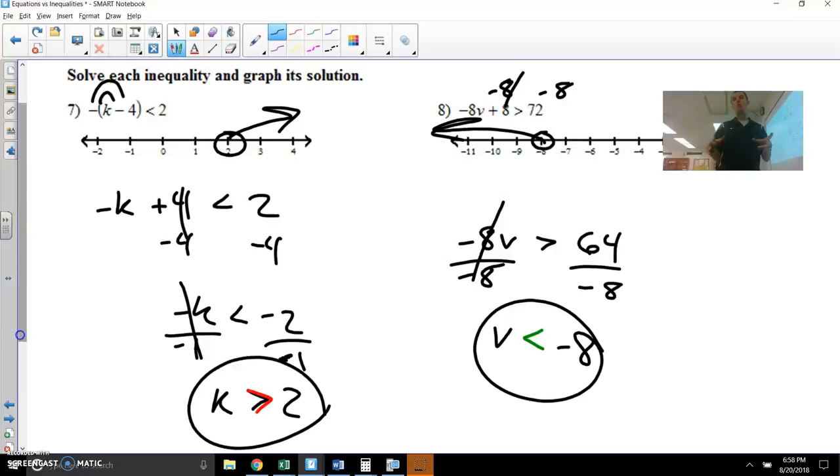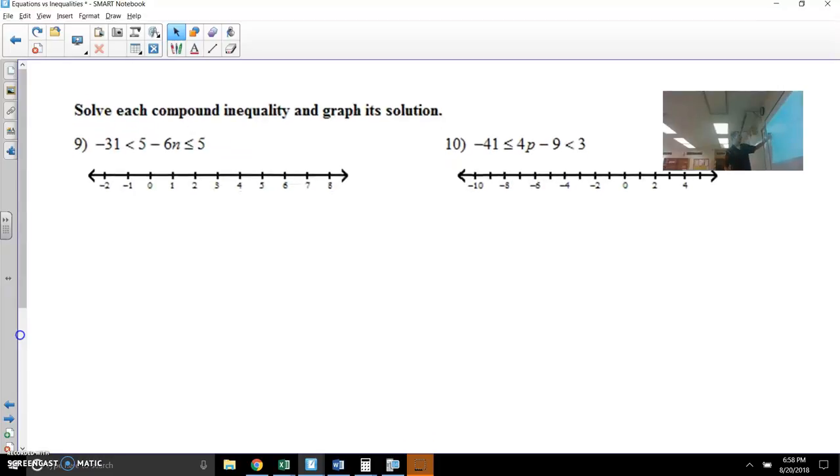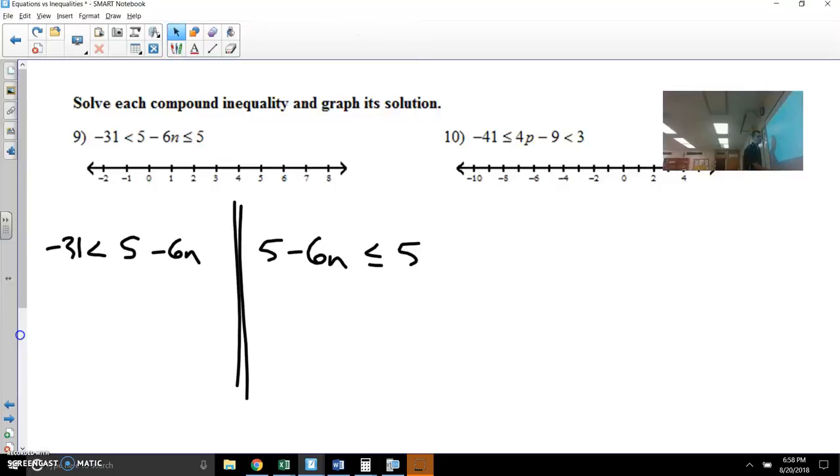So those are inequalities that just have like one solution and then greater than or less than that value. And so those are a little easier than what we call the compound inequalities. The compound inequalities require you to be able to do two directions. I want to solve the left, going left from the middle. And then later, I want to be able to go back and solve going right.